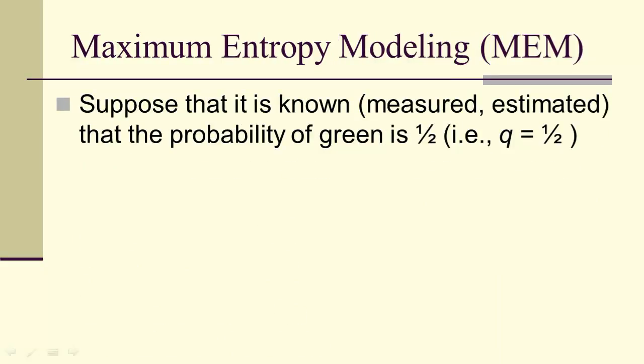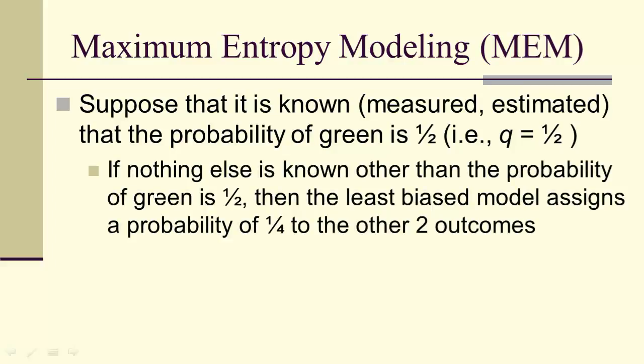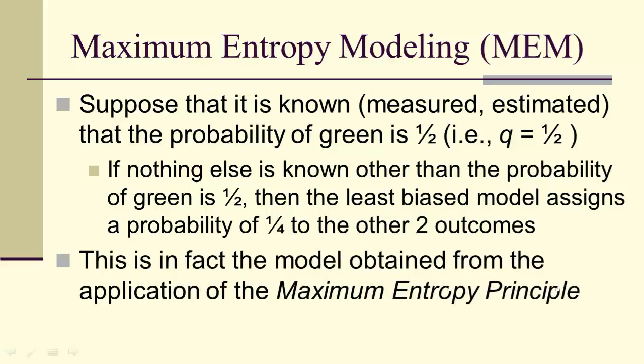Therefore, with a maximum at a third, a third, then that means that if we know nothing about the process, except that there are three possible outcomes, the least biased model is the one that assigns a probability of a third to each of the outcomes. So suppose that it's known, we've measured, estimated, somehow we've figured out that the probability of green is actually a half. In other words, q is equal to a half. Then, if all we know is that the probability of green is a half, then intuitively we know that the least biased model assigns a fourth as the probability to the other outcomes. And this is in fact the model that we would get if we use the maximum entropy principle, as we're now going to illustrate.